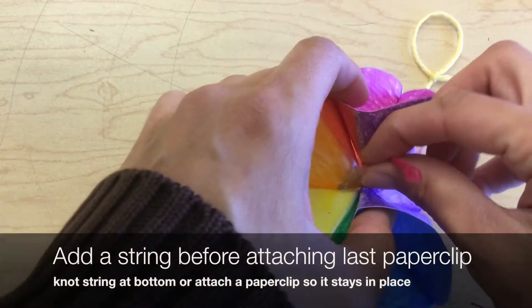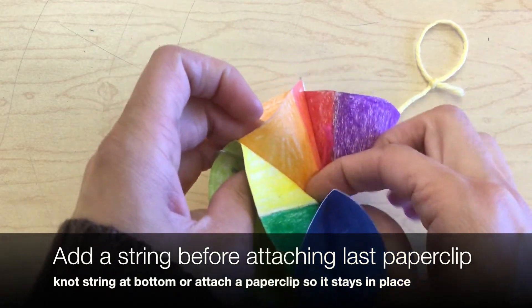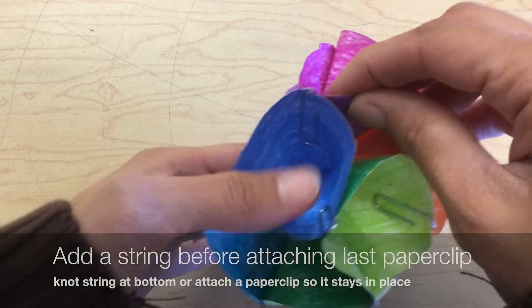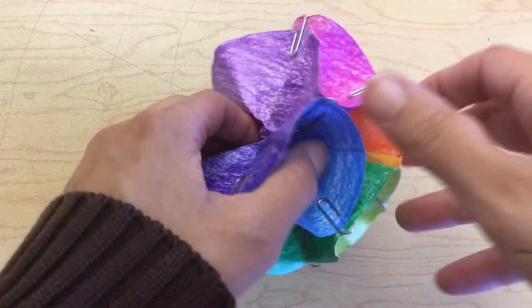Tie a paper clip to the end of a string and a loop on the other end of the string. Put that in your color wheel before you attach your last paper clip.